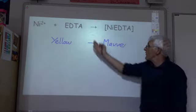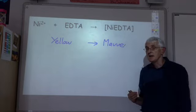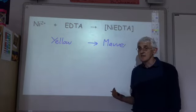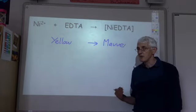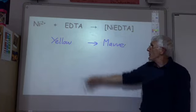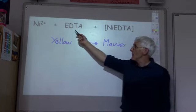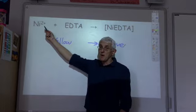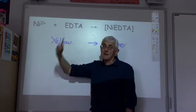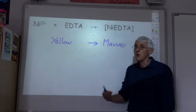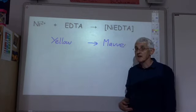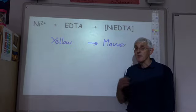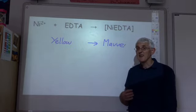So once we've got the volume of EDTA, the EDTA is a standard solution so we accurately know its concentration and the number of moles. The number of moles of nickel ion will be the same. Then once we've taken into account the dilutions we can work out the percentage by mass of nickel in our complex and compare that with the expected value.